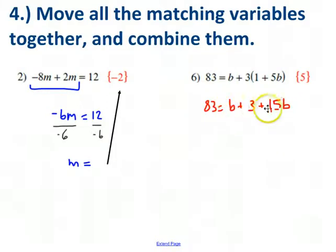Now I've got two cases of b, b and 15b. Together they make 16b. 16b plus three is 83. Well, now I want to get b by itself. And there are two steps here. I've got to get rid of the three, and I've got to get rid of the 16.